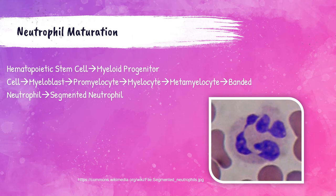That myeloid progenitor cell then becomes a myeloblast — and again, all of this is happening within the bone marrow. The myeloblast then becomes a promyelocyte, then a myelocyte, then a metamyelocyte, then a banded neutrophil or band, and finally a segmented neutrophil, which is the most mature form of the neutrophil cell line. The segmented neutrophil is shown in the photo on the right-hand side of this slide.